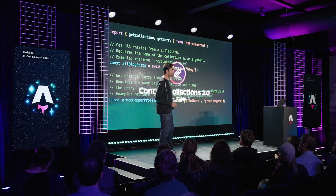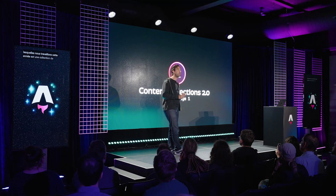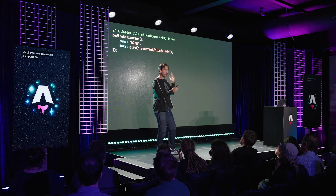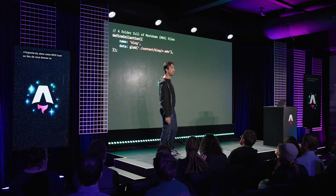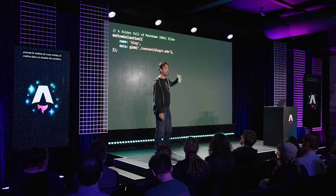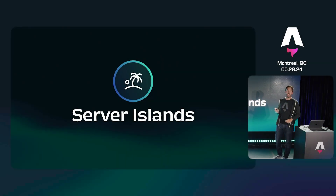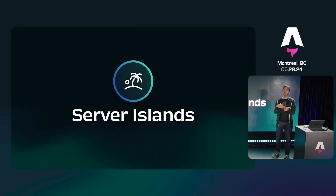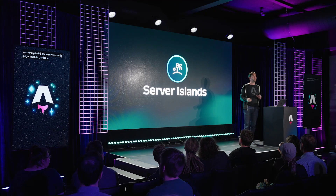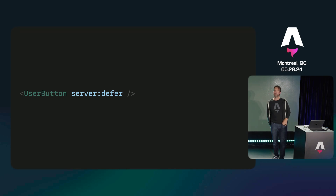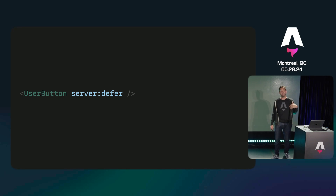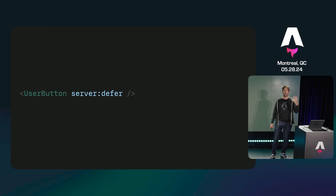I'm excited to announce that we're working on Content Collections 2.0 — something that lets you load your data from anywhere. Instead of an enforced content structure, you can put it wherever you want: in a content folder, or a different folder somewhere else entirely. Server Islands are also being explored: the idea of shipping server-generated content to the page while keeping the whole thing statically cached and globally served on a CDN. You add a server defer attribute, and you can pull in remote personalized data without forcing your entire page to be server rendered. You still get a static site, and then dynamically the page fetches that personalized content after it loads.